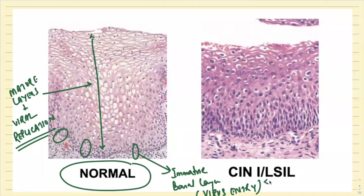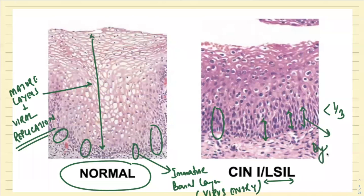In L-CIL, there is dysplasia with cells arranged in a disordered fashion, becoming hyperchromatic, but they are limited to the lower one-third of the epithelium. Less than one-third of the epithelium is involved by dysplasia — disordered arrangement with hyperchromatic nuclei. You can compare with the normal epithelium on the left-hand side.